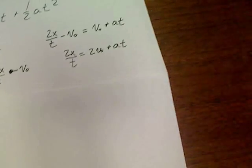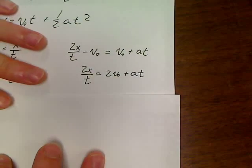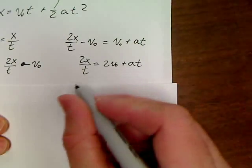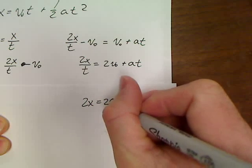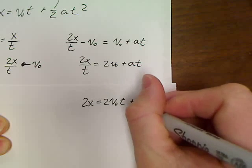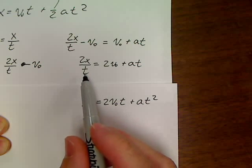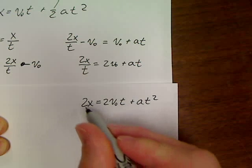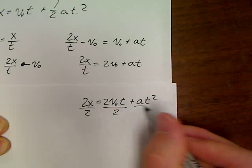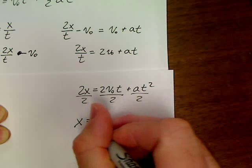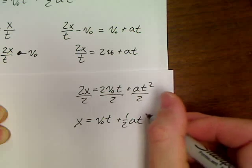And then another sheet of paper, obviously. So now if we keep going along those lines, this would be 2x equals 2vot plus at squared. If we multiply both sides by t, we cancel it. Now if you would like to get it down to just x, divide everything by 2. And that gives you x equals vot plus 1 half at squared.